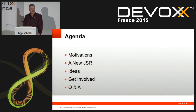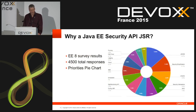Then we'll talk about how you can get involved if you want to contribute some ideas, and finally we'll have some time for questions. So, why do we need a new Java EE Security API JSR?